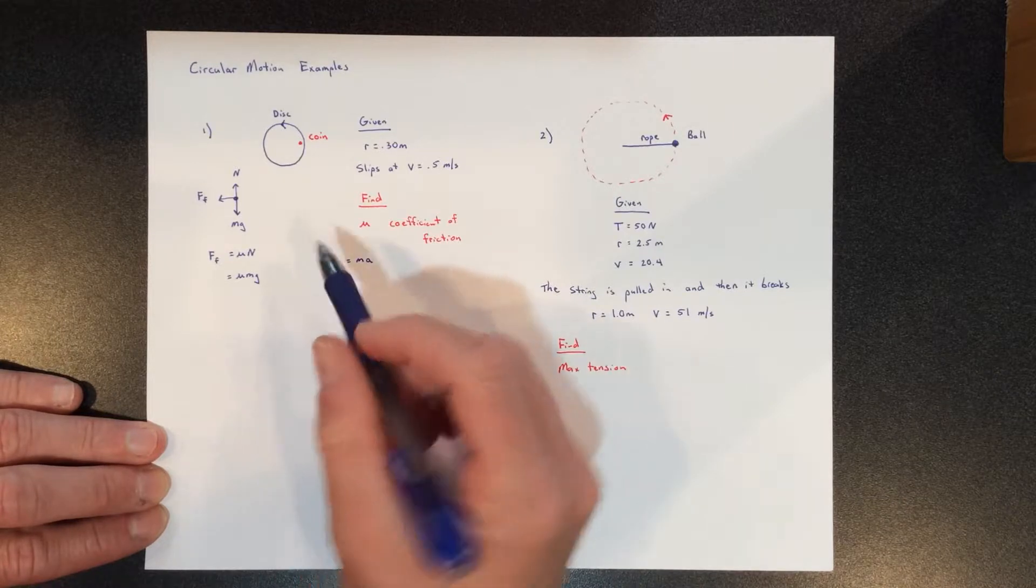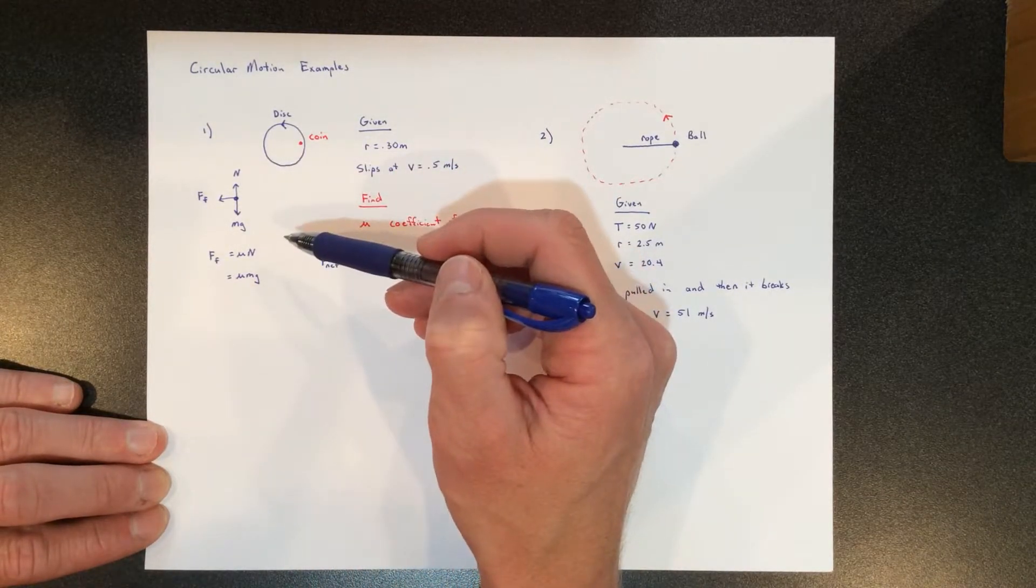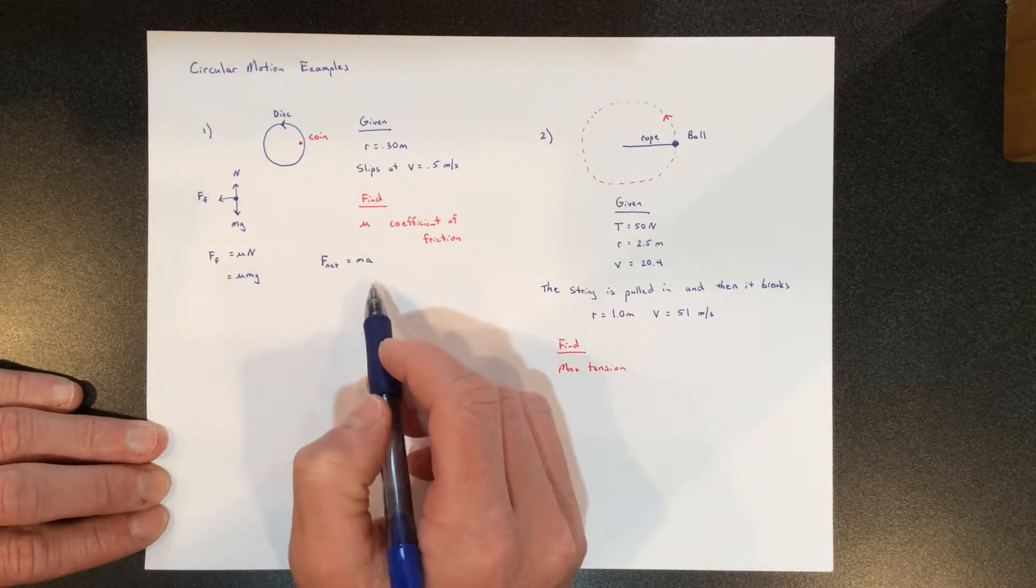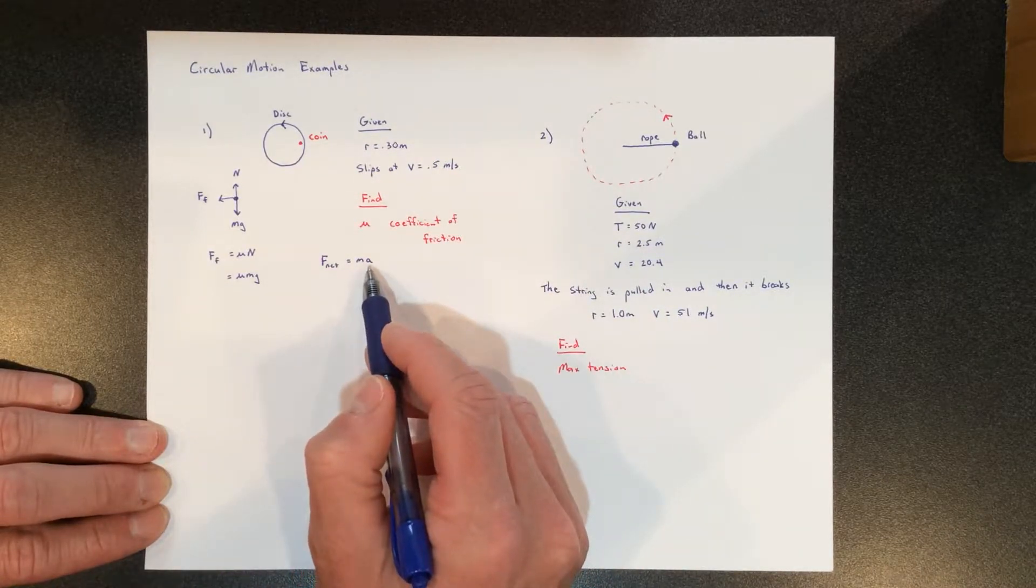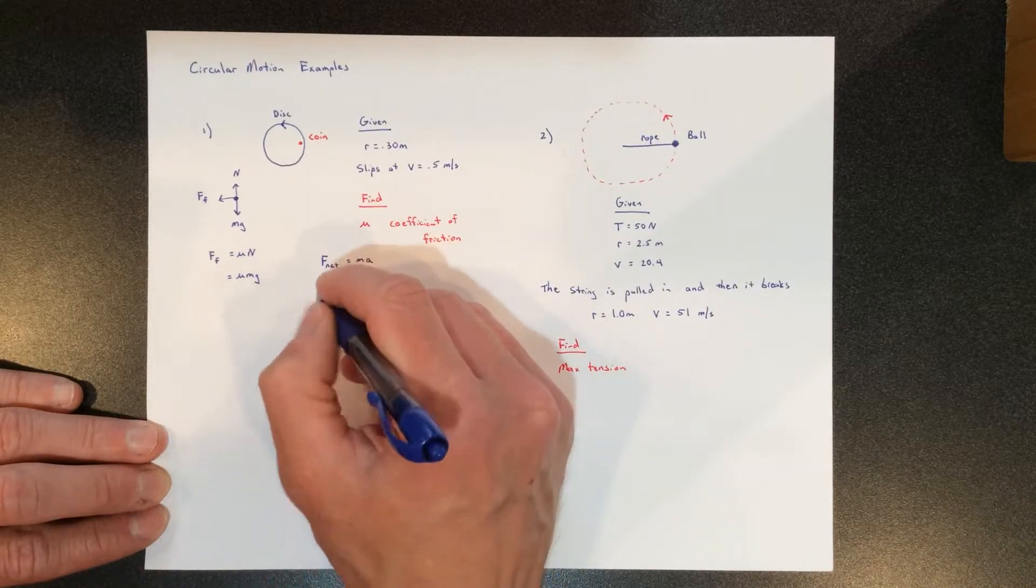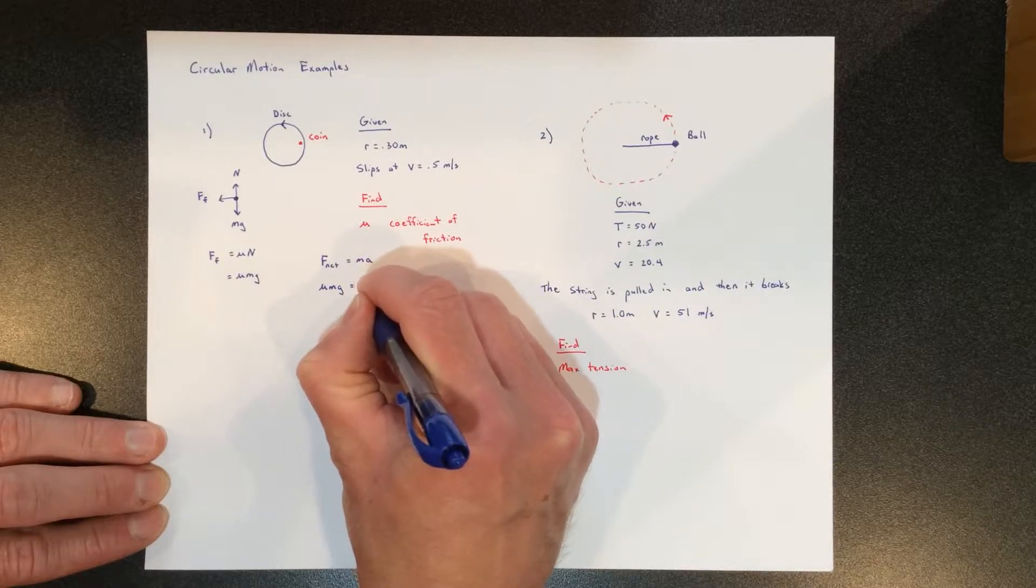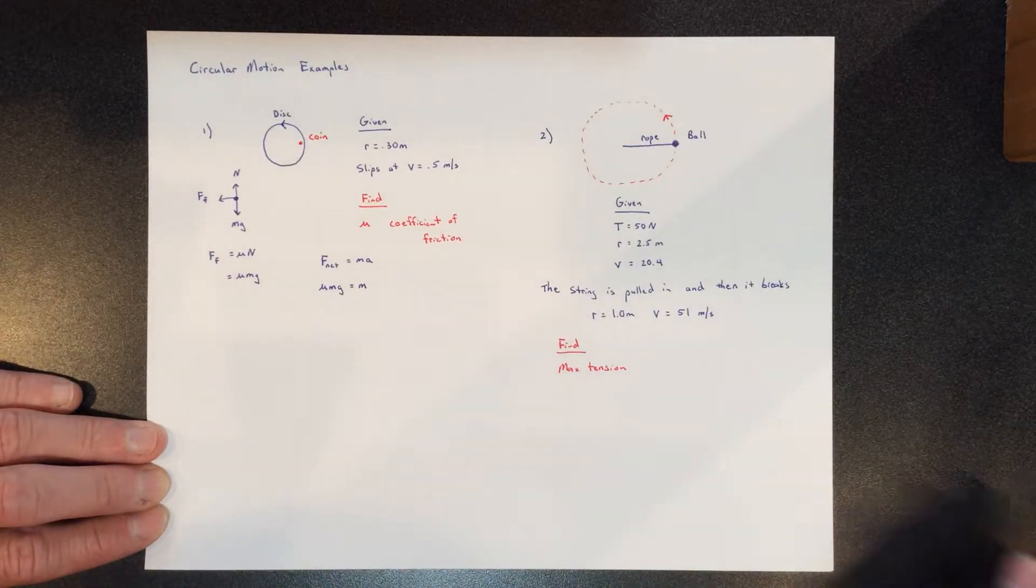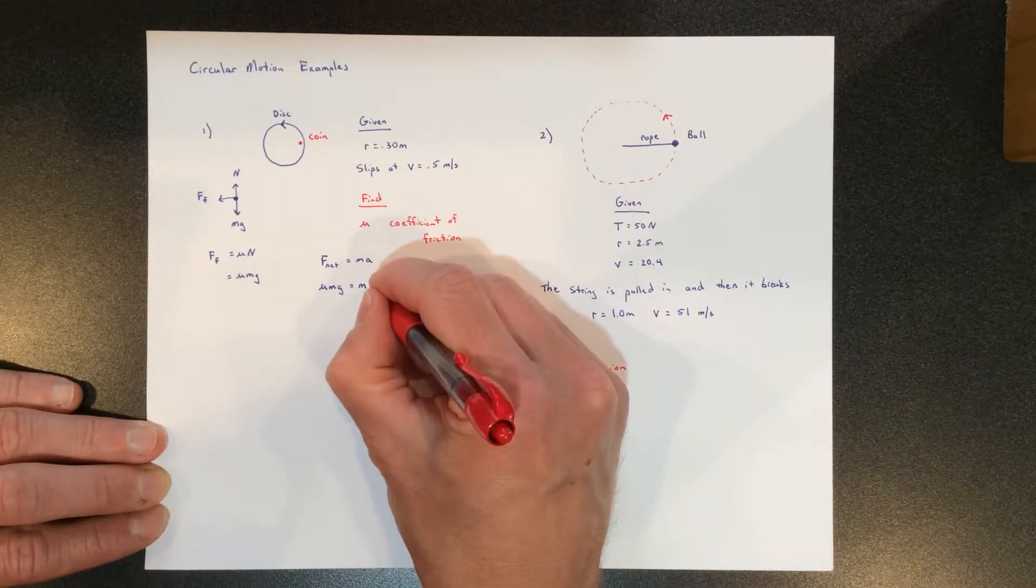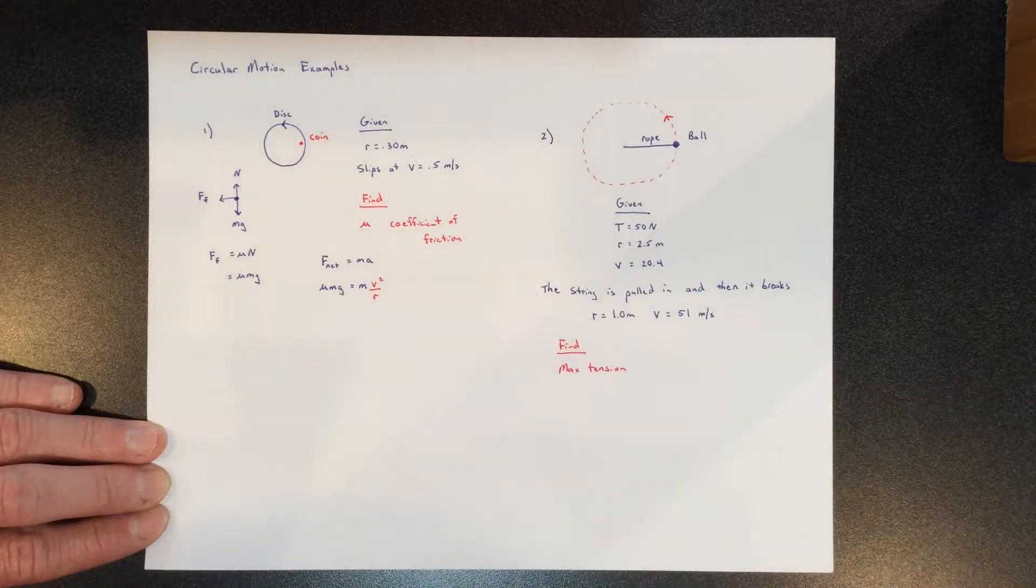The net force on this thing—again, we're not worried about these two forces; they're balanced and they're in the vertical direction anyway. We're really only looking at the centripetal acceleration. What's causing this thing to move in a circle? In that case, the only force is friction. So we have mu mg equals m times the centripetal acceleration, and then we replace the centripetal acceleration by what we know it's equal to: v squared over r.